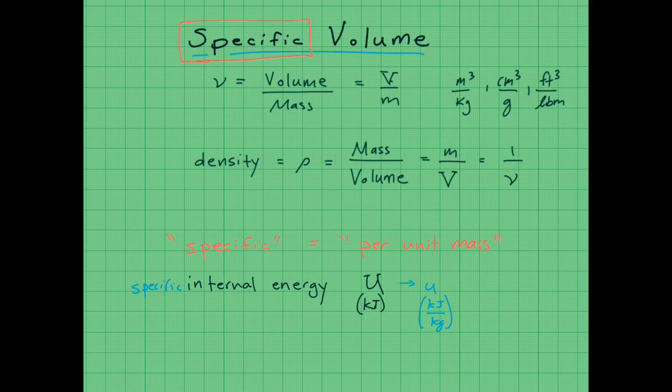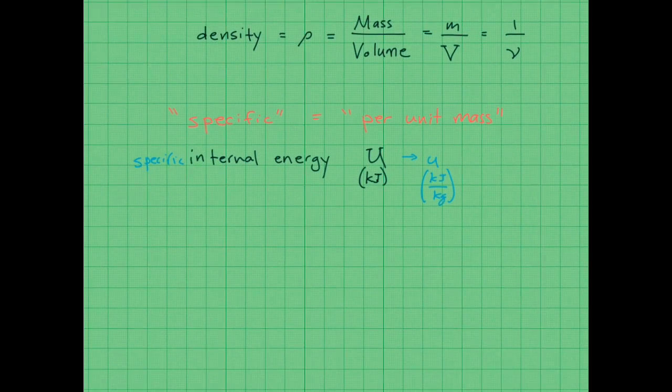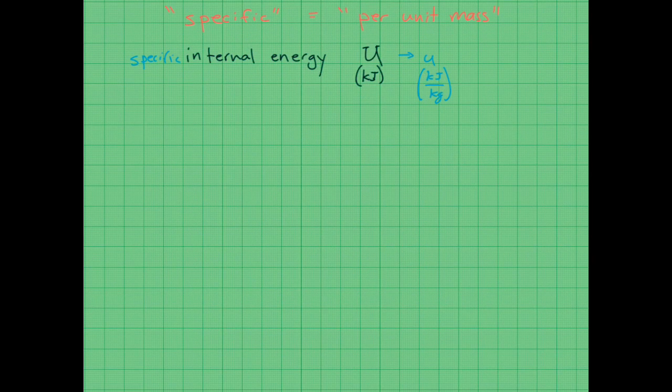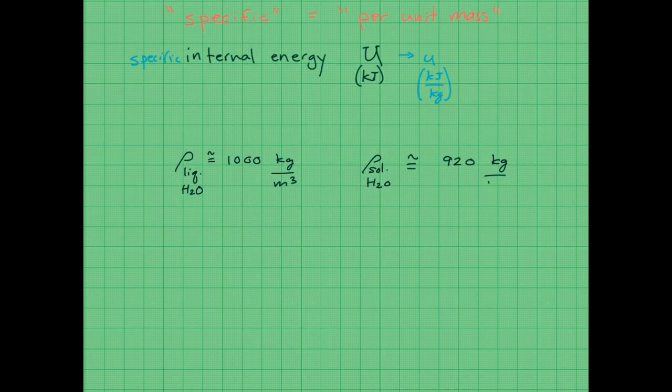So why is a property like specific volume useful in thermodynamics? Well, we looked at another example where we said the density of water is approximately 1,000 kilograms per meter cubed. And this is, it's important to note, this is liquid water. And we want to compare that with the density of solid water, or ice, which we'll say is approximately 920 kilograms per meter cubed.